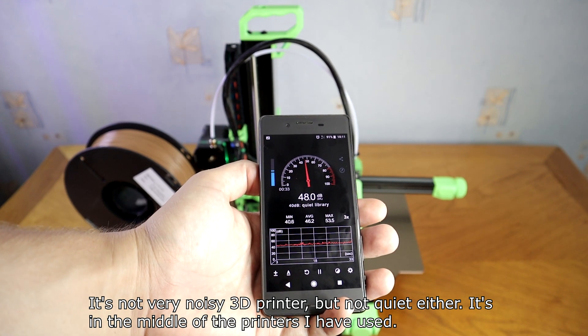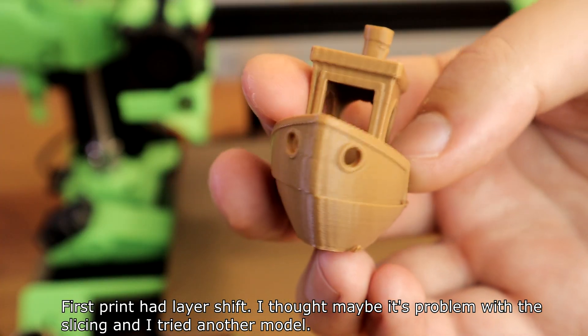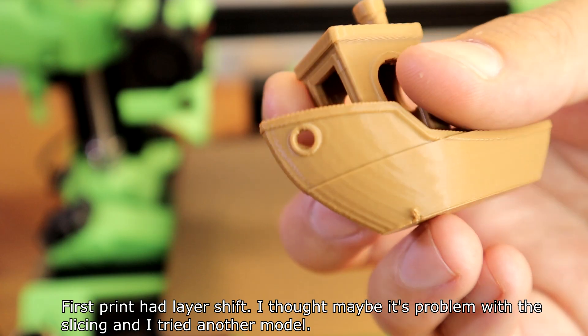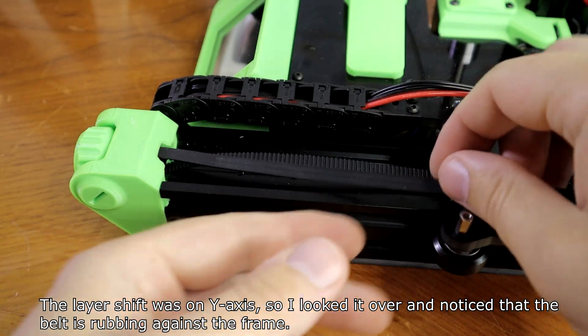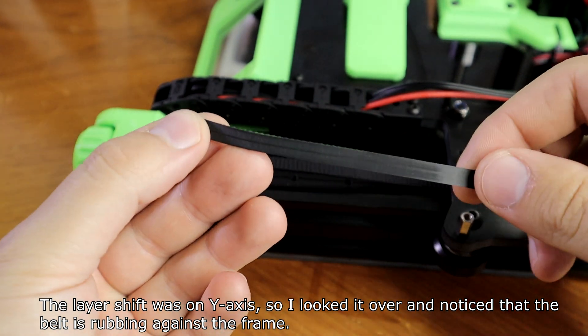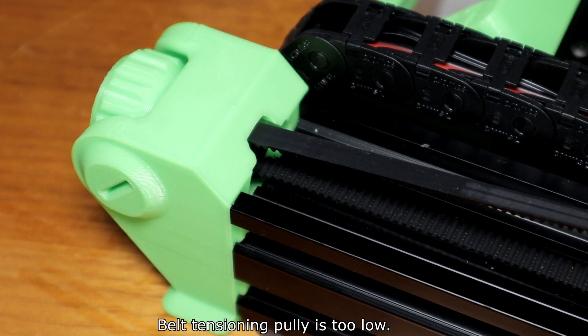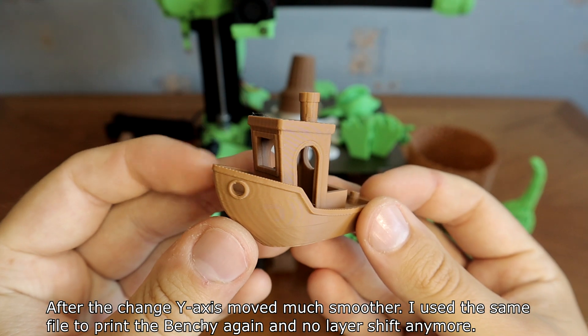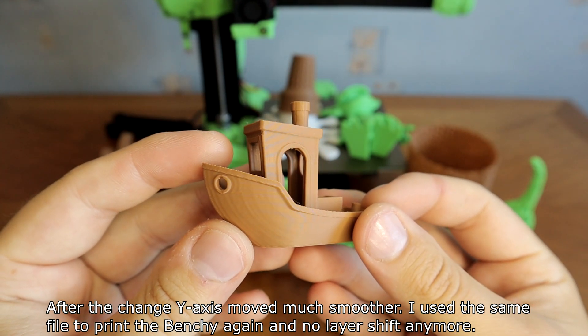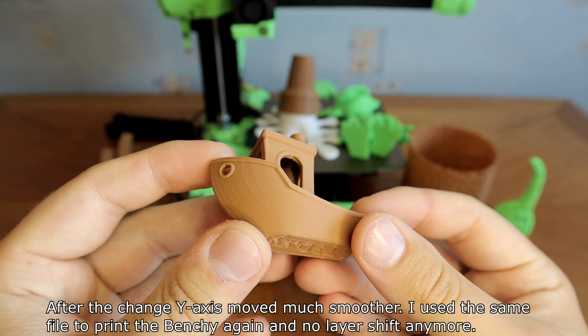First print had layer shift. I thought maybe it's a problem with the slicing and I tried another model. Then I got it even worse and I had much more than one layer shift. The layer shift was on Y-axis, so I looked it over and noticed that the belt is rubbing against the frame. Belt engineer body is too low. I redesigned the bracket and made it a little bit taller. After the change, Y-axis moved much smoother.